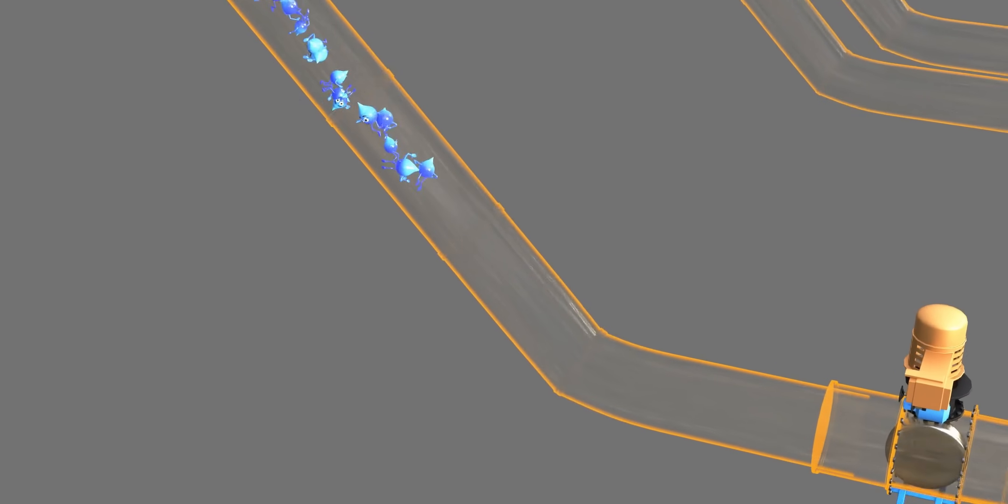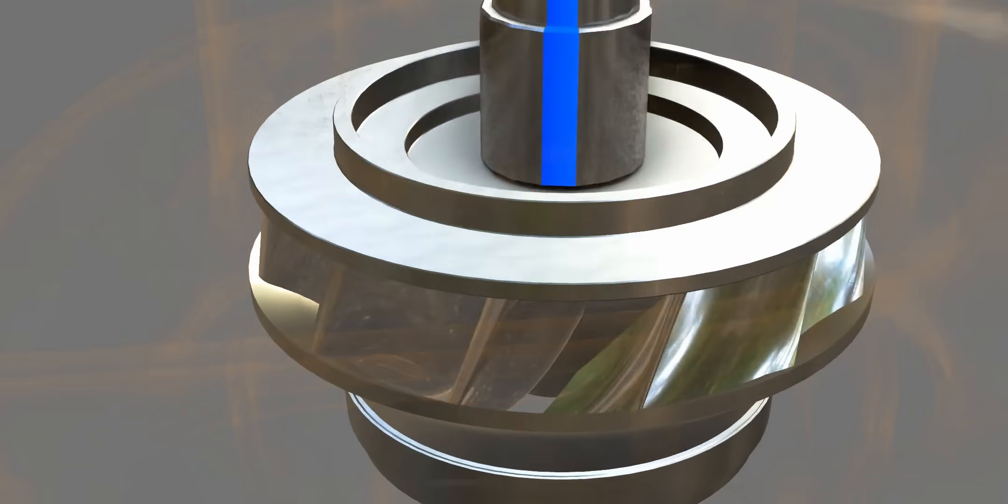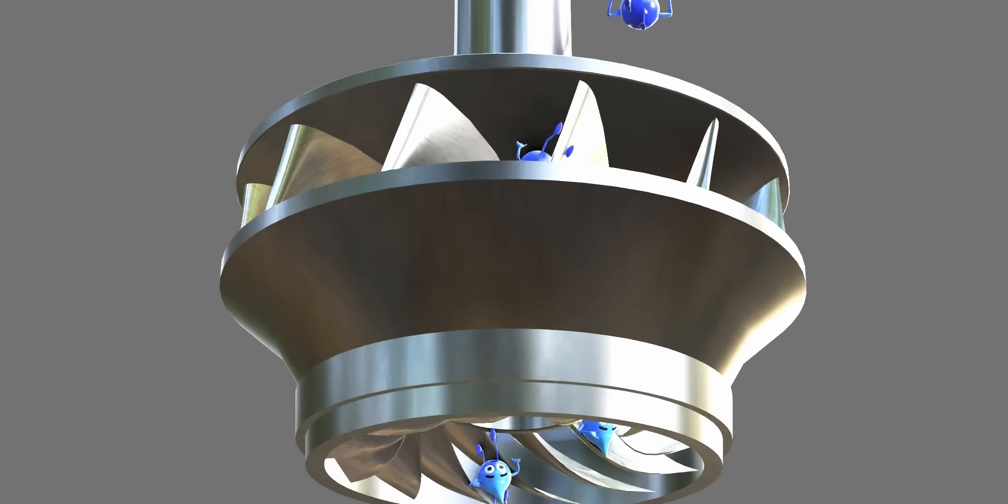After this long downward journey, the particles attain a good speed. The high-pressure and high-speed water stream now enters the runner of the Francis turbine. You know the details of how they turn the turbine.